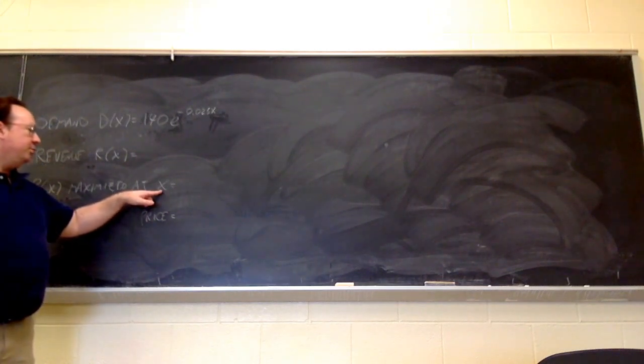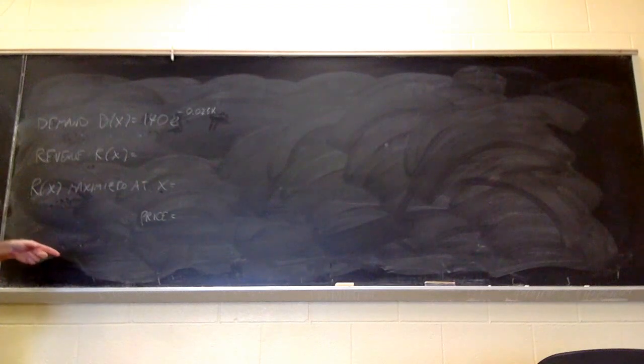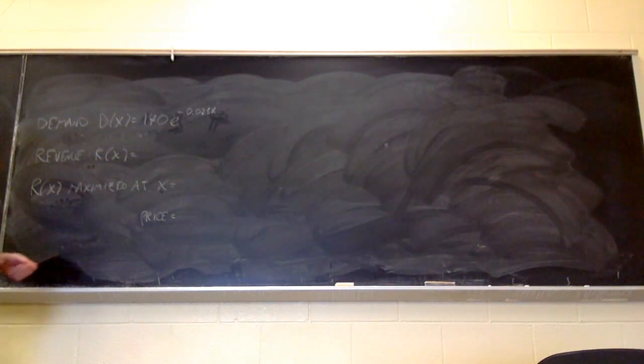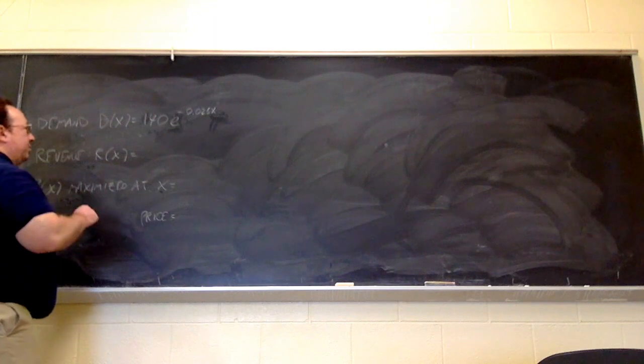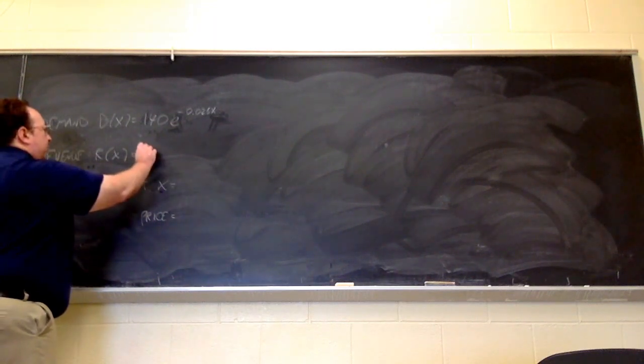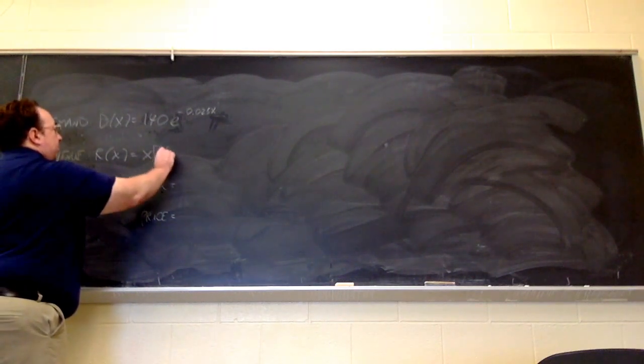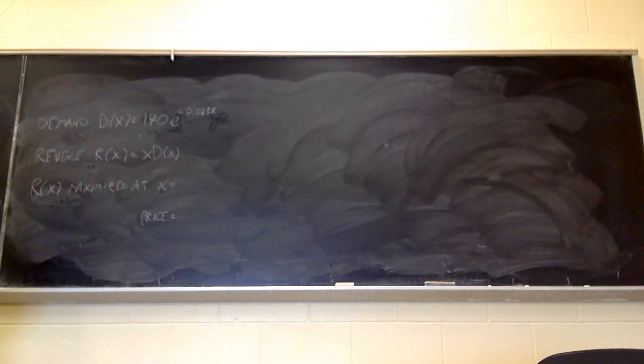And then, from that, we will determine the price at which that number of units should be sold. Now, to get the revenue function is actually quite easy. All we have to do is multiply the demand function, d of x, by x, the number of units sold.